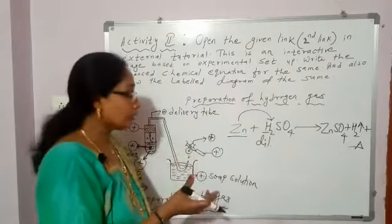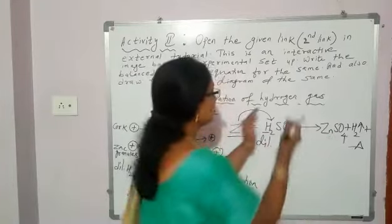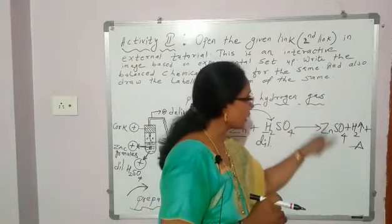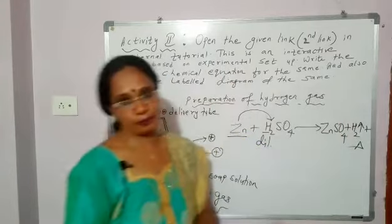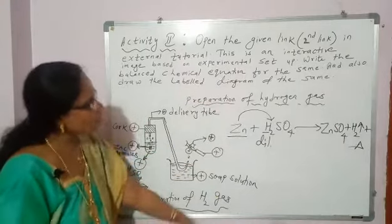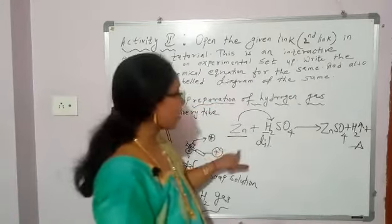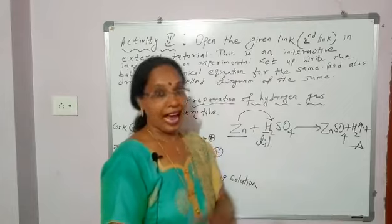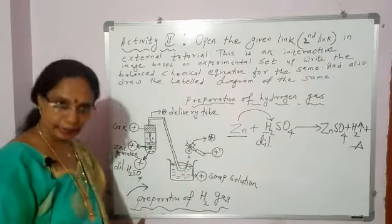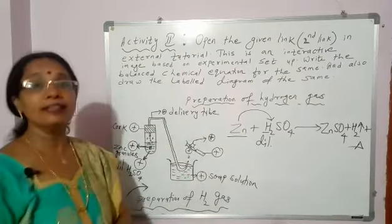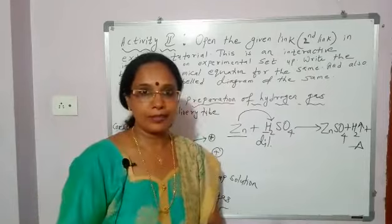So this is the chemical equation for this setup — preparation of hydrogen gas — that you will write. Then you have to balance it, but this equation is already balanced: one zinc atom on the reactant side, one zinc atom on the product side; sulfate — one on each side; hydrogen atoms — two on each side. So the equation is already balanced. In the ruled page, write the question of Activity 2, give the heading 'Preparation of Hydrogen Gas,' then write the balanced chemical equation. On the plain page, draw the labeled diagram of the experimental setup for preparation of hydrogen gas. This is your Activity 2. Do it in the file page and keep it in a folder.